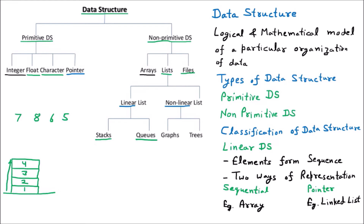But when you have to take out the book, you will take the first book which will be 4. So 4 will be first out. Then afterward 3 will be out. Then afterward 2 will come out. Then afterward 1 will come out.